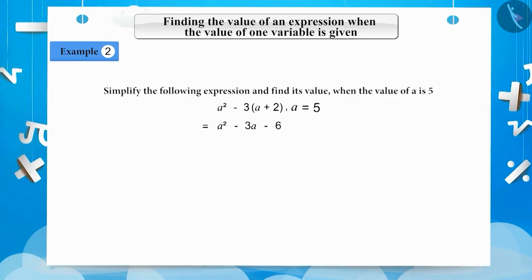Substituting a is equal to 5 in this expression, we get 5² - 3 × 5 - 6, is equal to 25 - 15 - 6, is equal to 25 - 21, is equal to 4. The solution to this is 4.